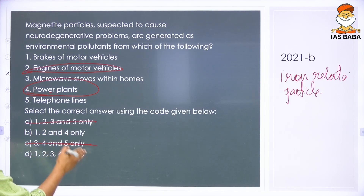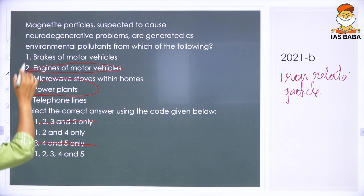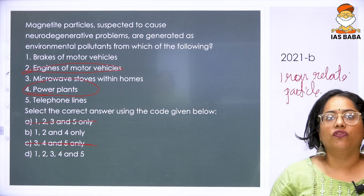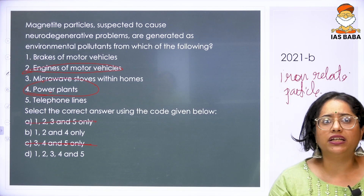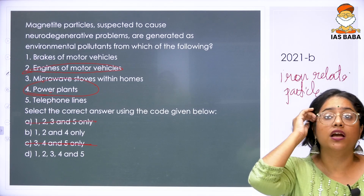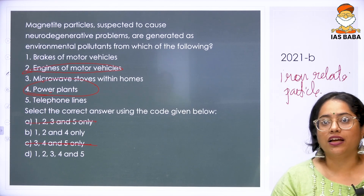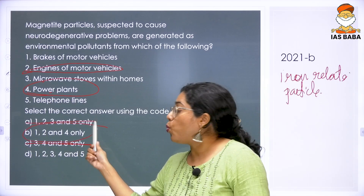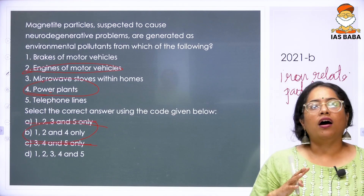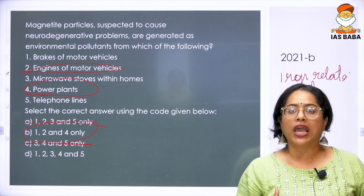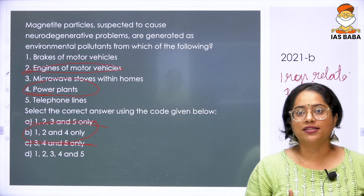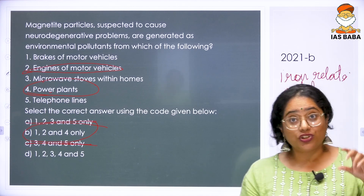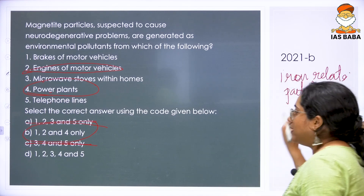Now we check whether brakes of motor vehicles, microwave stoves, or telephone lines cause any of this. There is no evidence of telephone lines, microwave stoves, or brakes causing iron oxide particle release. Microwaves have other problems but not iron particles — in fact, iron cannot even be used in microwave stoves. The answer is B: 1, 2, and 4. If instead of microwave stoves they had said open cooking using wood, that would have been an answer too, because burning biomass also releases iron-containing particles.